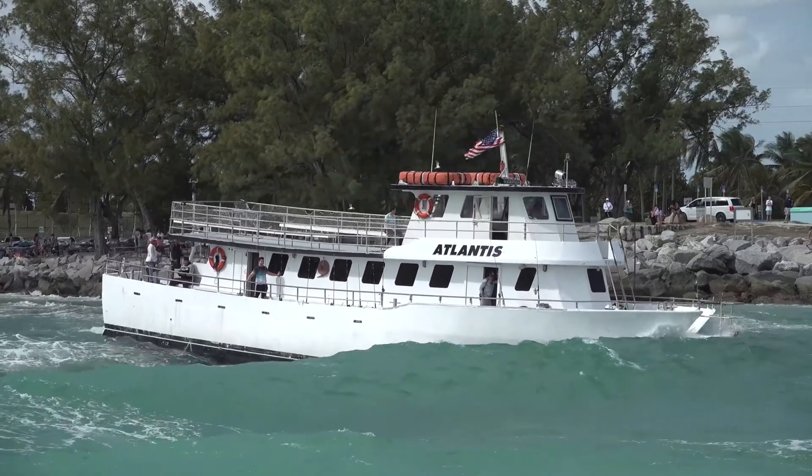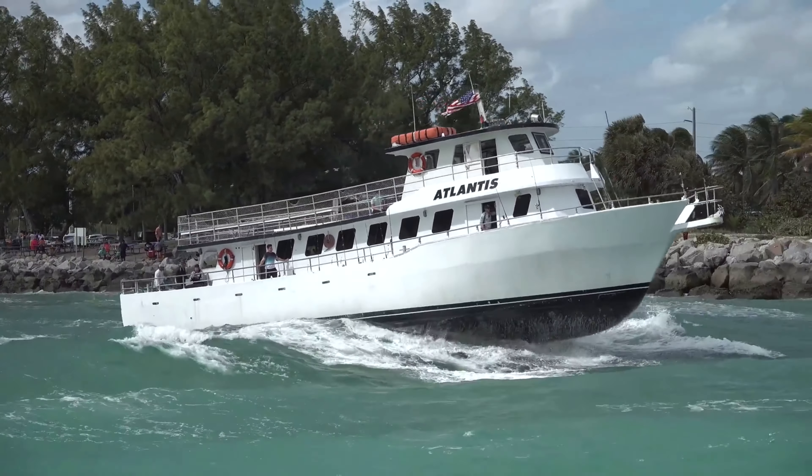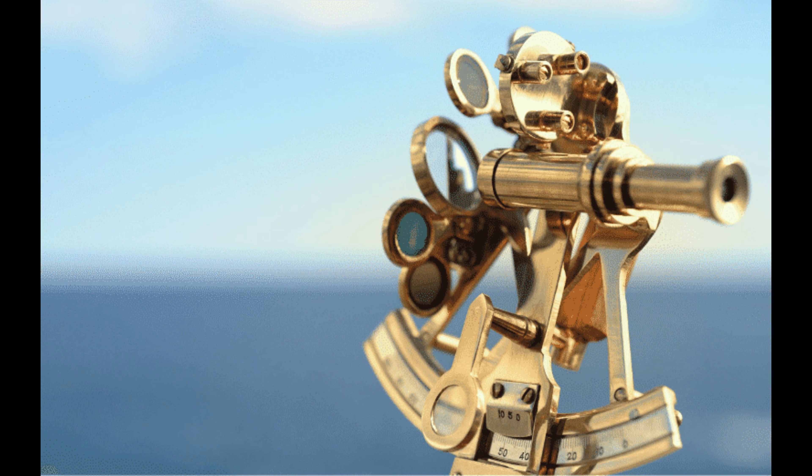The astrolabe uses gravity to find the horizon, but since boats tend to move around, the astrolabe was later replaced with a sextant, which is a high precision instrument. But it comes with a disadvantage for our use case.